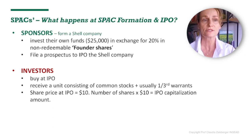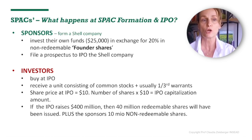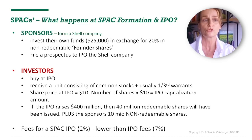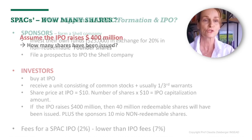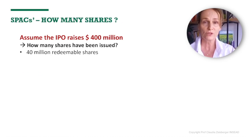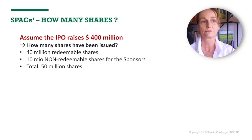The share price at IPO is usually $10. If the IPO raises $400 million, then 40 million redeemable shares will have been issued, plus the sponsor's shares of 10 million non-redeemable shares. So we have redeemable shares and non-redeemable shares that the sponsor holds. The fees for a SPAC IPO are reasonably low — 2% — certainly lower than an IPO of a traditional company, simply because there's nothing to due diligence. Assuming the IPO raises $400 million, that means we have 40 million redeemable shares acquired by institutionals at IPO and 10 million non-redeemable shares for sponsors, for a total of 50 million shares.